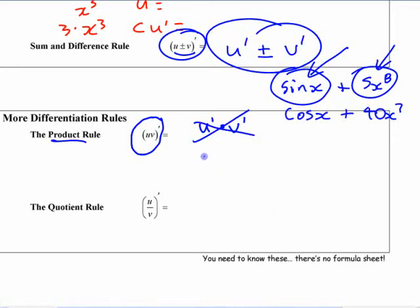It is actually... it is the rate of change of one of them times the other one, plus the first one times the rate of change of the other one. This is not the prime of one, this is a little tick mark here. It's the derivative. It's the derivative of u times v times the other function, and then the first function times this derivative.